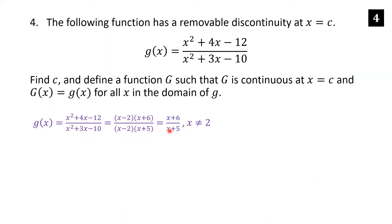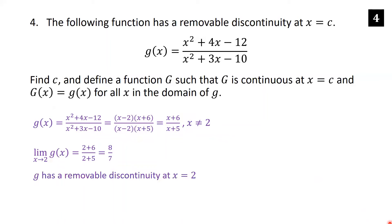Taking the limit as x→2: since x ≠ 2 we use the simplified form, giving (2 + 6)/(2 + 5) = 8/7. This confirms that g has a removable discontinuity at x = 2, so c = 2. Note that x = −5 gives a non-removable discontinuity, but the question asks for the removable one.